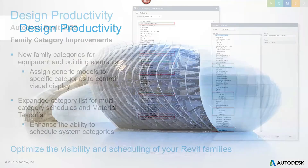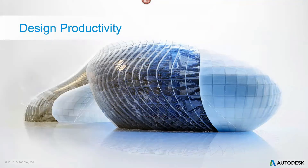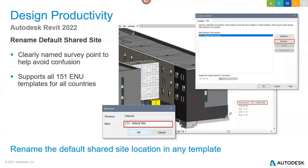Those were the main MEP updates. Now let's run through some cross-platform updates across those three themes. First: design productivity. You now have the ability to rename a default shared site. If you've struggled in the past knowing which survey point you're referencing from, or what the survey point of a linked model is, you can now rename that clearly to help avoid confusion — a small but useful update.